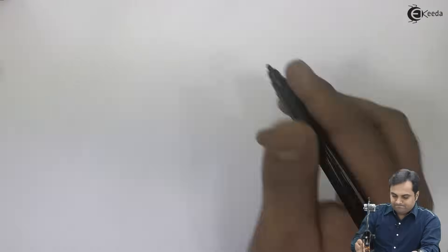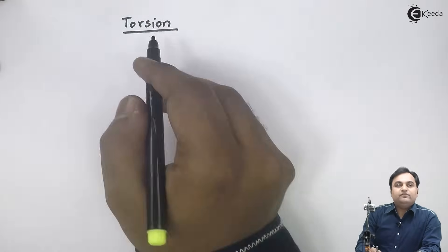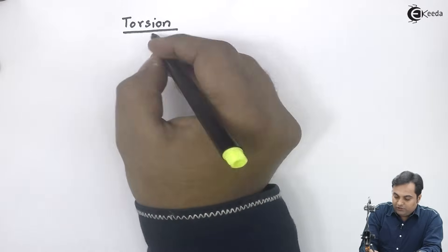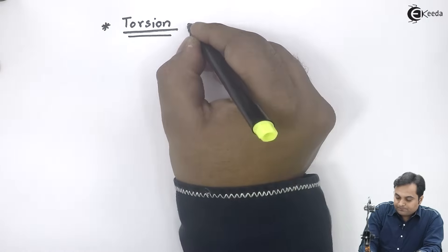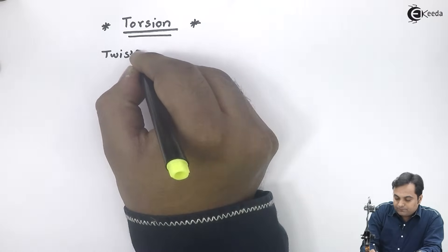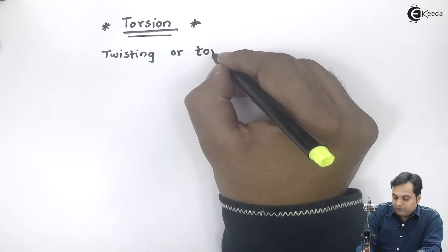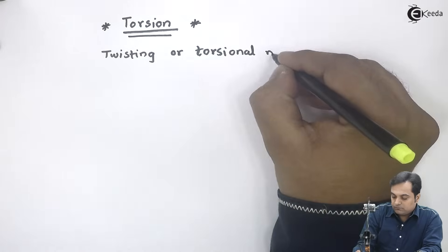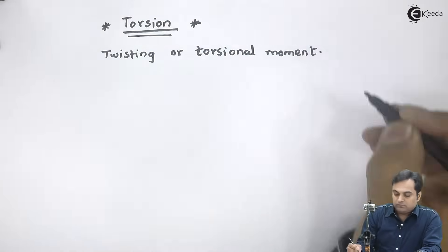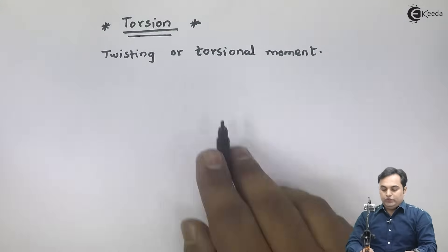Hello students, let us start with a new topic today. The name of the chapter is torsion. When we say torsion, the meaning of torsion is twisting or torsional moment. So whenever we talk about torsion, we have a twisting or torsional moment.